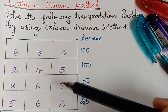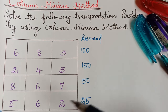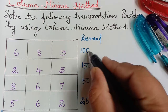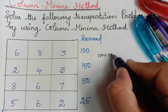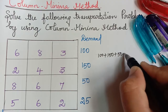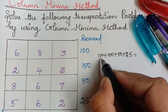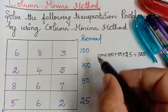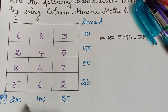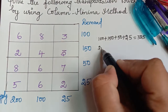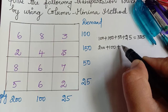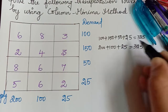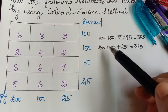Before doing it, we have to always check whether the given problem is balanced or unbalanced. The total demand is 100 plus 150 plus 50 plus 25, which adds up to 325. Similarly, the total supply is 200 plus 100 plus 100 plus 25, which is also equal to 325. So the total demand is equal to the total supply, and therefore this is a balanced transportation problem.